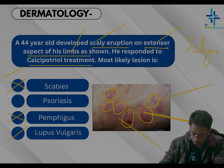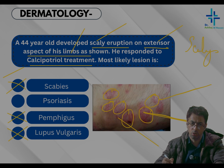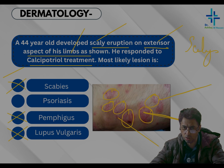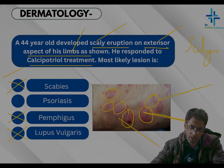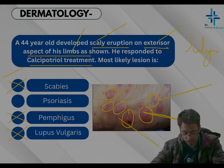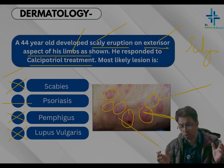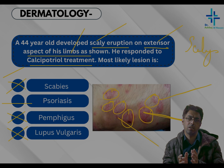Lupus vulgaris is a form of cutaneous tuberculosis and there is no history or test indicating a tubercular lesion. But classically, with all the clues given — scaly lesions, extensor distribution, limb involvement, and response to calcipotriol — psoriasis is the correct answer.